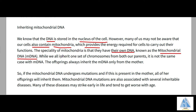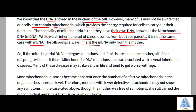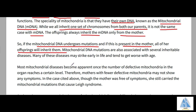We inherit one set of chromosomes from both parents, but this is not the same with mDNA. The mDNA is always inherited from the mother. So if the mitochondrial DNA undergoes mutations and is present in the mother, all her offspring will inherit them. The disorder becomes apparent once the number of defective mitochondria in any organ reaches a certain level.